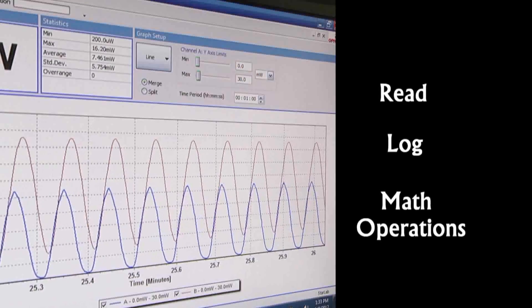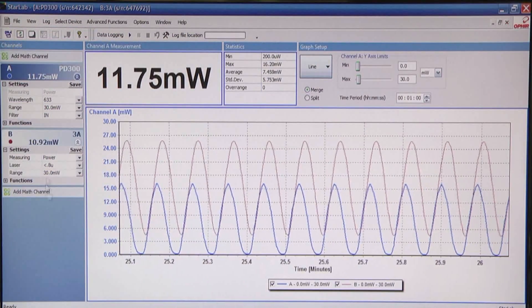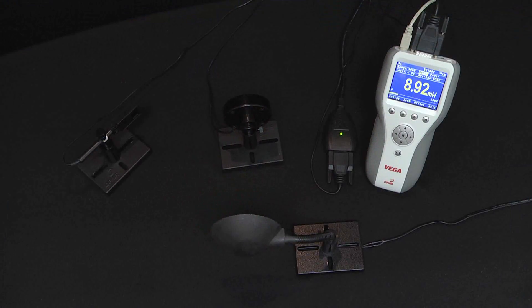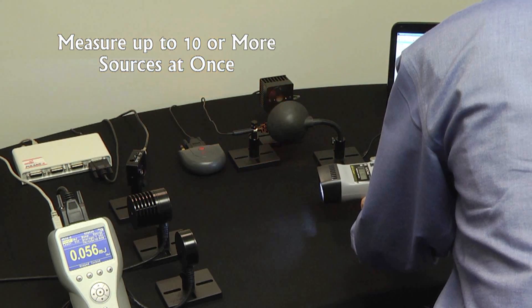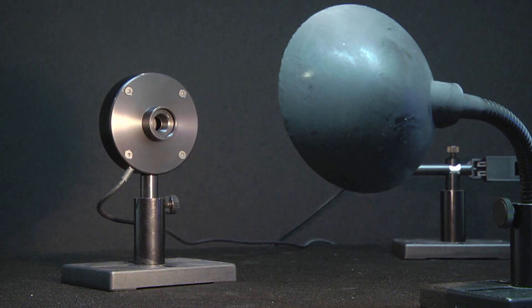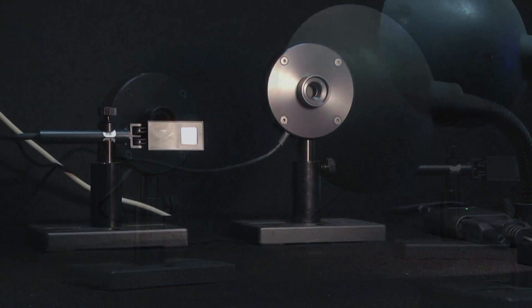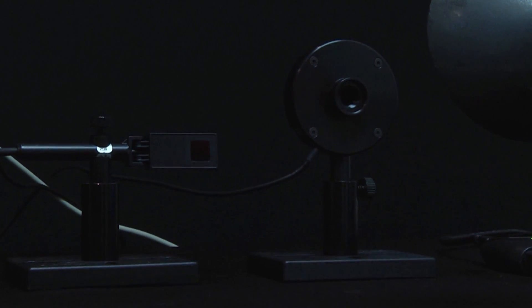In this demo we have two sources connected, but Starlab can measure up to 10 or more sources at once. We are simulating a changing laser source with an oscillating light source illuminating two Ophir power sensors.